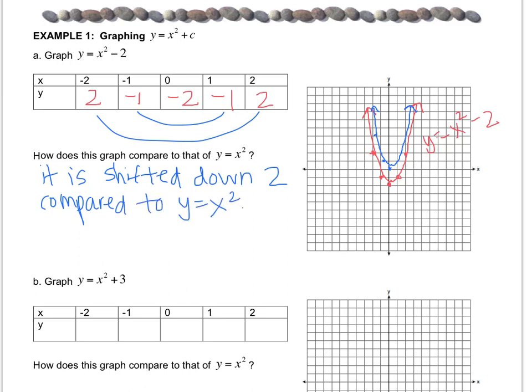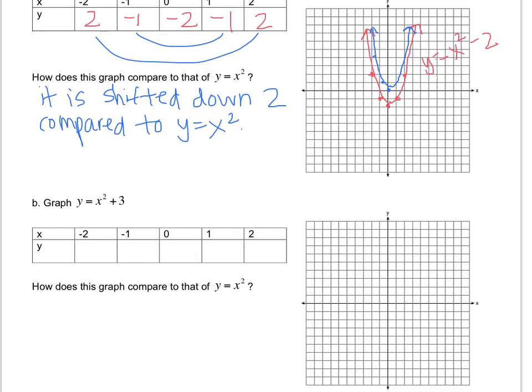One thing that some students will think is that the graph is wider because it goes around the y = x² graph. But it's actually not. The only reason it goes around is because it's going through different points. But it's the same width of the original graph, only shifted down. Why don't you pause the video and try letter b on your own.